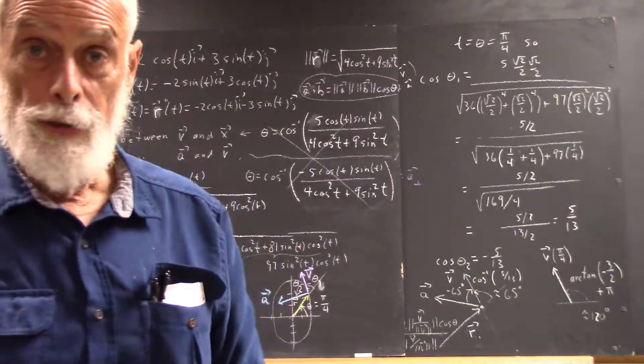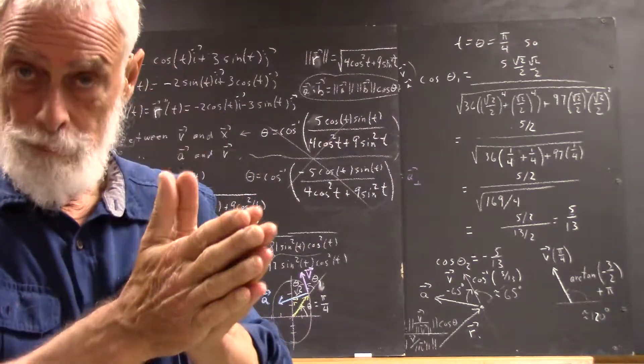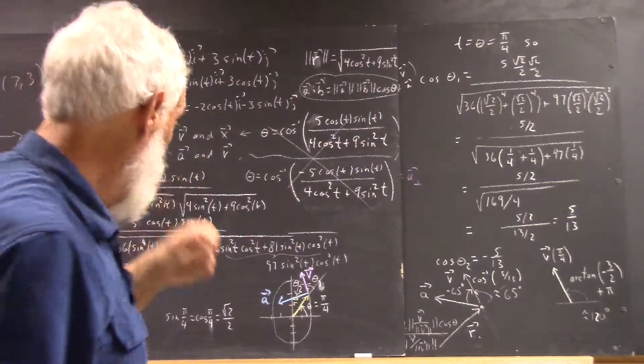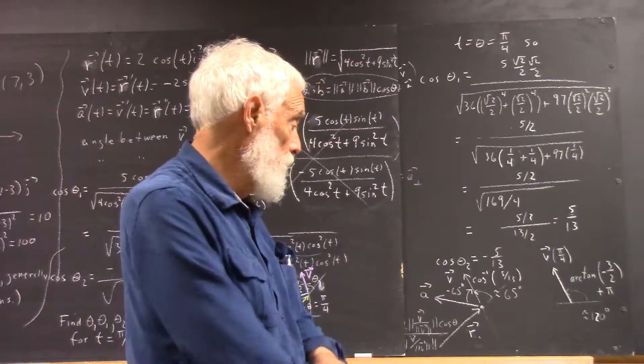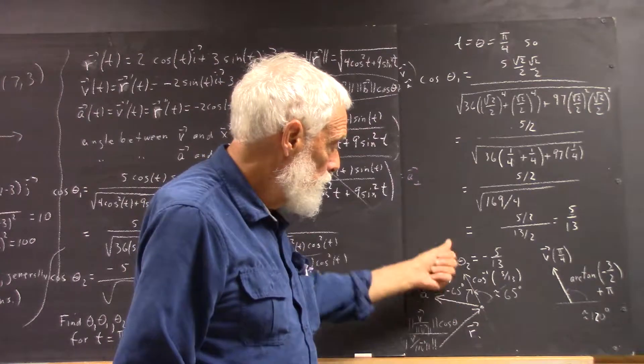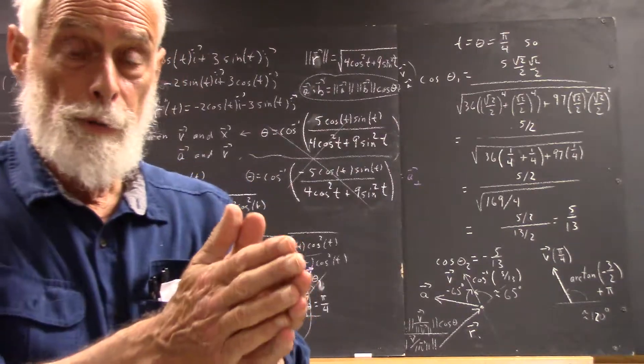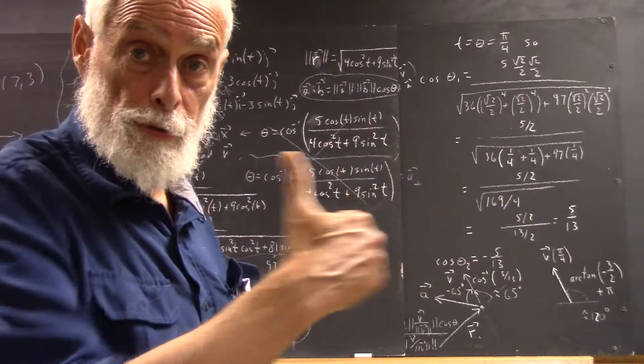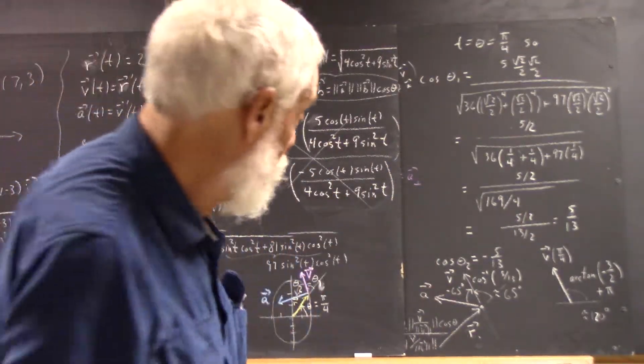The component of the acceleration vector in my direction of motion is what speeds me up if it's positive, slows me down if it's negative. So, here we have acceleration vector, which I've drawn like this, and it's got a component in this direction and a component in this direction. Now, the component perpendicular to my motion is what changes my direction, because my direction is always changing as I move around the circle. My direction will go through 360 degrees before I get back to here.